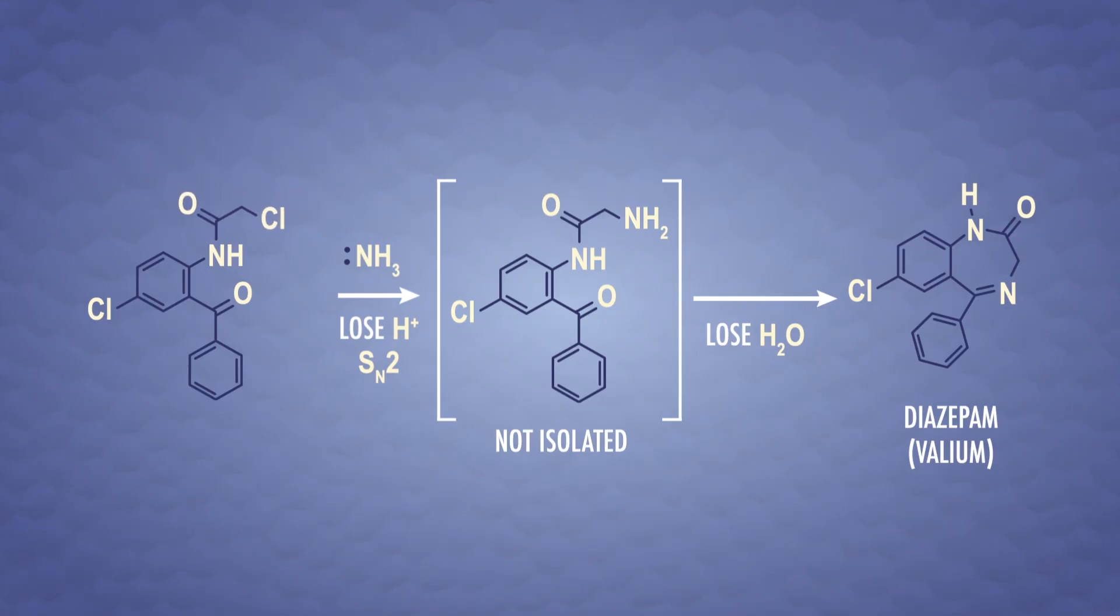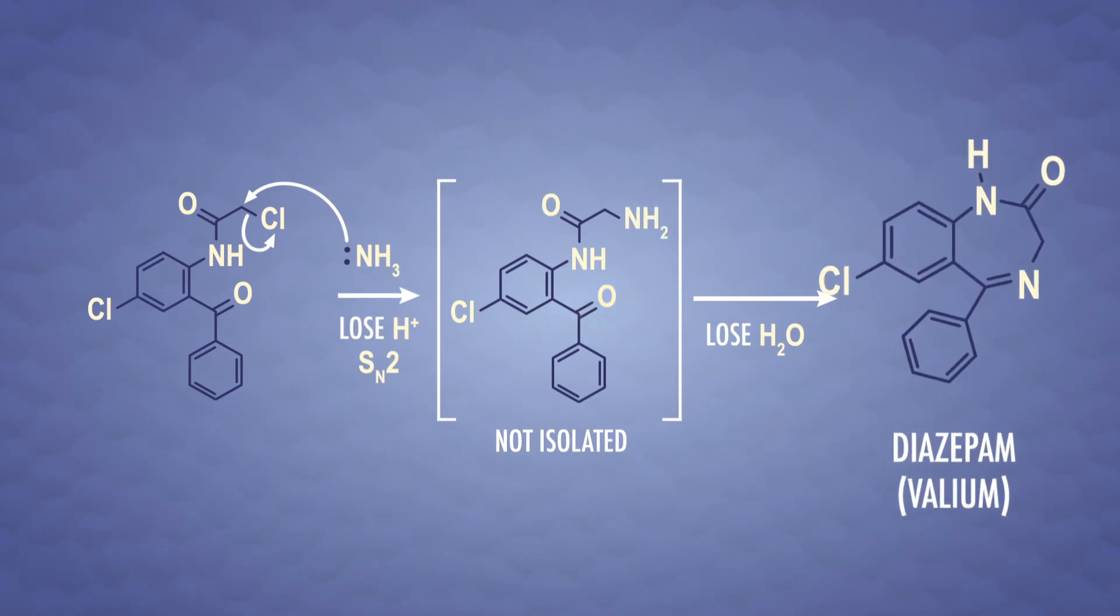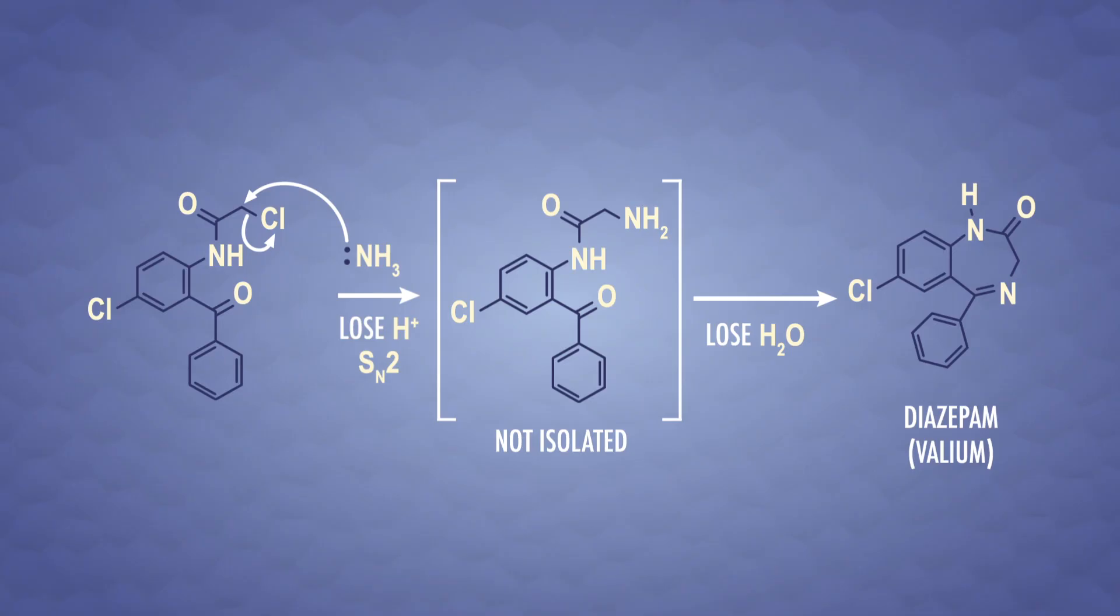A likely mechanism starts with a carbon attached to the chlorine being attacked by nucleophilic ammonia, replacing the chlorine with NH2 in an SN2 reaction. After that, you'll notice we have an amine nice and close to a carbonyl group. That carbonyl group is irresistible to the nucleophilic nitrogen, and it attacks, forming the imine that is part of diazepam. This intramolecular reaction closes the seven-membered ring that's a signature part of this family of medicines.